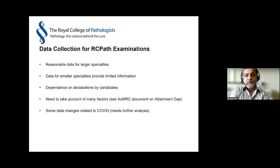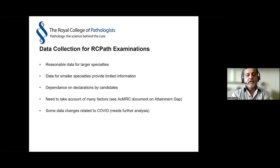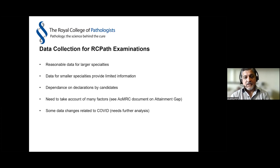We get reasonable data for the larger specialties like histopathology, hematology, and clinical biochemistry. The smaller specialties provide limited information and may not show the trends we want to look at. Some data depends on what's been declared by candidates, so there are gaps, and we need to be mindful that many other factors might result in differential attainment.